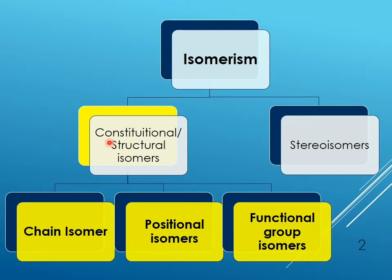Constitutional isomers are also known as structural isomers. For structural isomers, the atoms are arranged in a completely different order. Today we are going to cover three types of structural isomers: chain isomers, positional isomers, and functional group isomers.